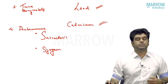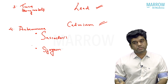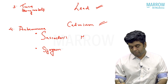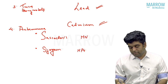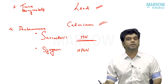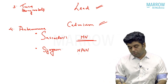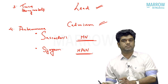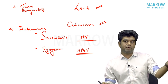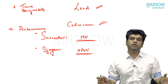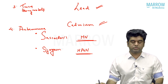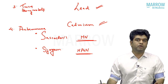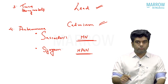Sarcoidosis and Sjogren's produce CTID. However, the most common glomerular manifestation of sarcoid is membranous nephropathy, and the most common glomerular manifestation of Sjogren's is MPGN. Overall, both primarily involve the tubule and can lead to CKD. That is the fourth cause — autoimmune conditions.